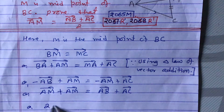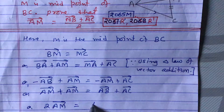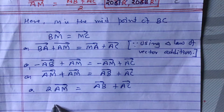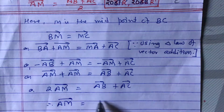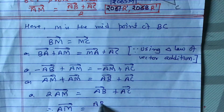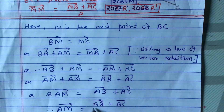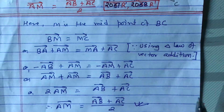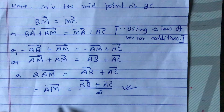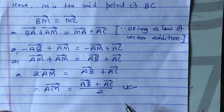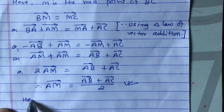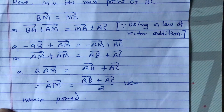AM plus AM gives us 2 vector AM, so 2 vector AM equals AB plus AC. Dividing both sides by 2, therefore vector AM equals AB plus AC divided by 2. This is what we needed to prove. If in the question it is given AB equals a, AC equals b, and AM equals m, you can substitute and prove m equals a plus b divided by 2. Hence proved.